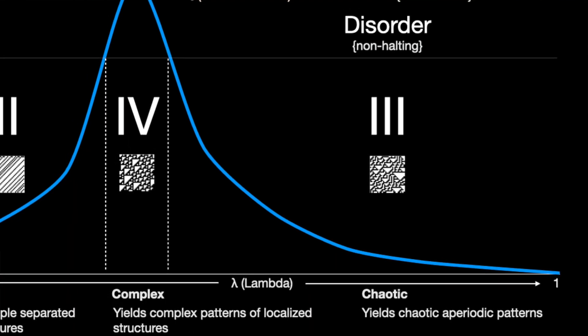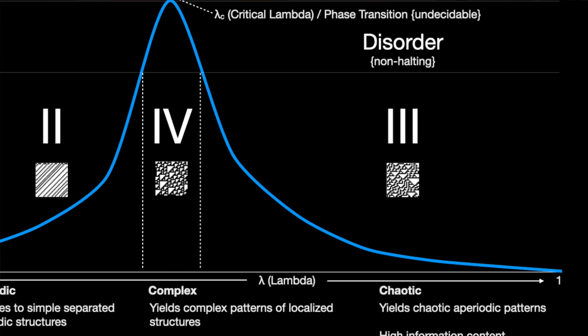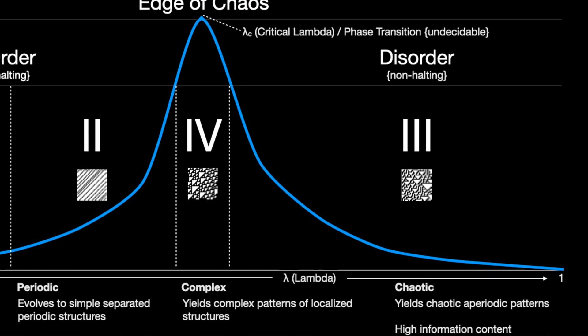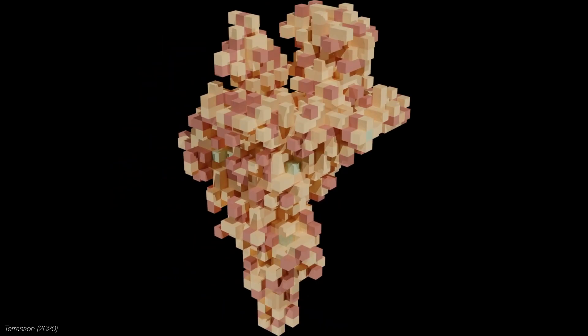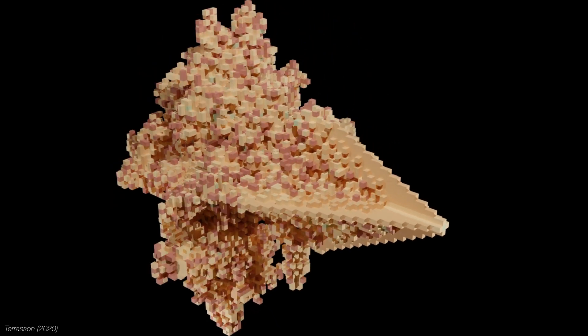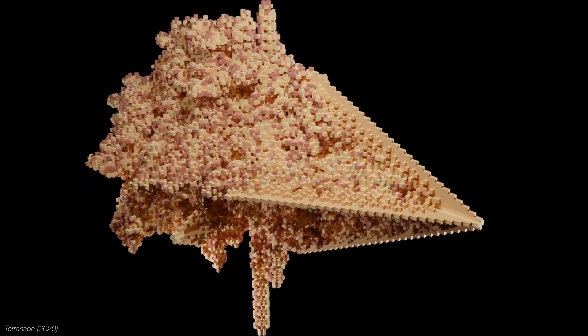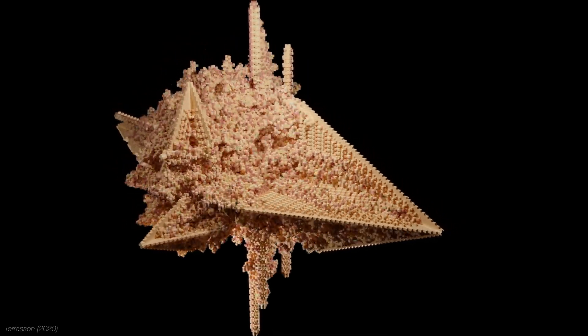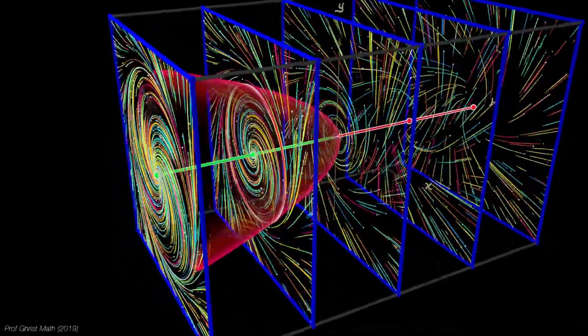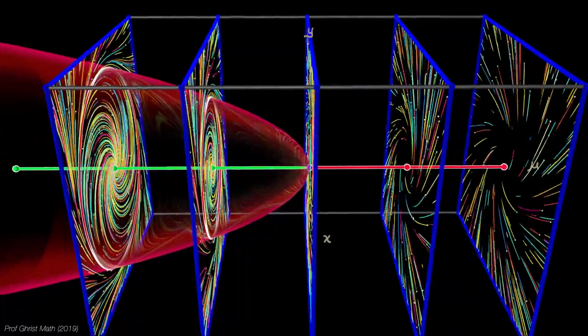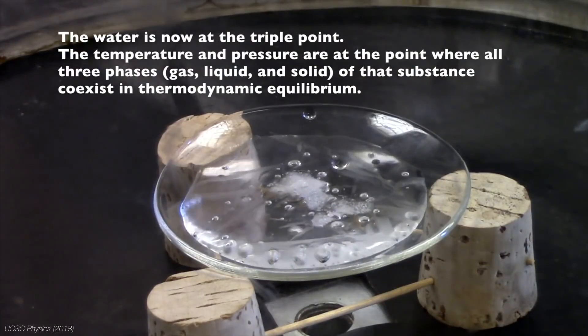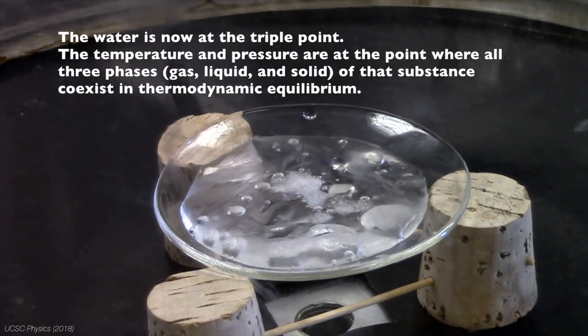In a typically narrow region, class 4s live near a critical lambda — the highly volatile transition phase between order and disorder. Automata evolve into patterns that interact in complex and fascinating ways, with the construction of local structures able to survive for long stretches of time. It's a metastable zone between stability and instability, simple symmetries and randomness, and predictability and unpredictability.